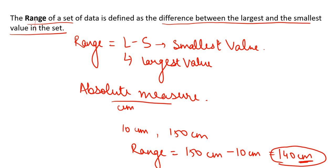In absolute measures, if we have two datasets — one in meters and one in centimeters — in order to compare the two ranges, we take a relative figure. For example, if we have data in kilograms and data in liters, we cannot directly compare kilograms with liters. So in order to compare them, we need a relative measure.